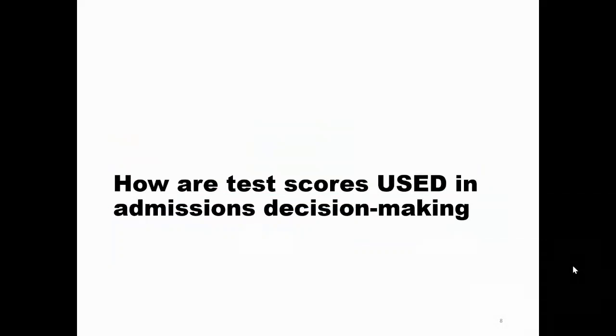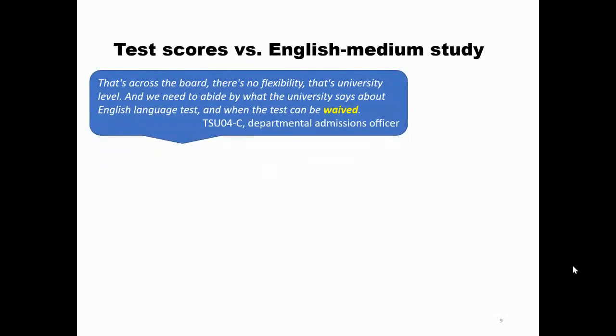Turning to the first research question — how are test scores used in admissions decisions — our first key point relates to the values attached to different types of evidence for language proficiency: how does test score evidence compare with previous English medium education evidence as an indicator of proficiency? One informant spoke of waiving a language test score several times. Waiving implies there is a rule that is temporarily suspended in an exceptional case, and the thing being waived — namely language test scores — is otherwise the norm and default.